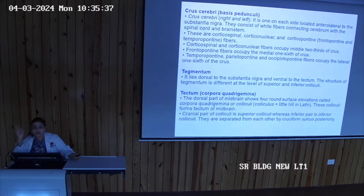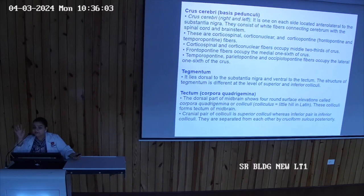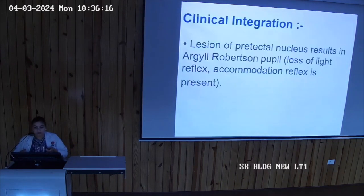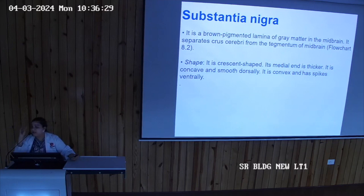The tegmentum is the most important part. The substantia nigra is located dorsal to the crus cerebri and ventral to the tectum. It is a brown-pigmented lamina of grey matter in the midbrain, separating the crus cerebri from the tegmentum. Its shape is crescent — a half-moon shape.